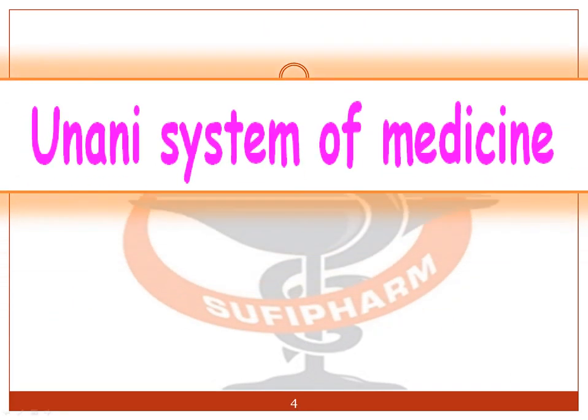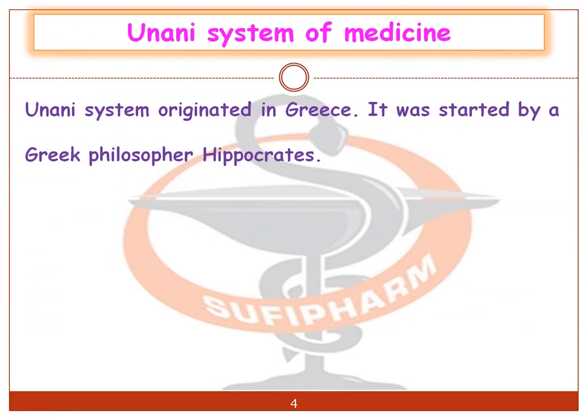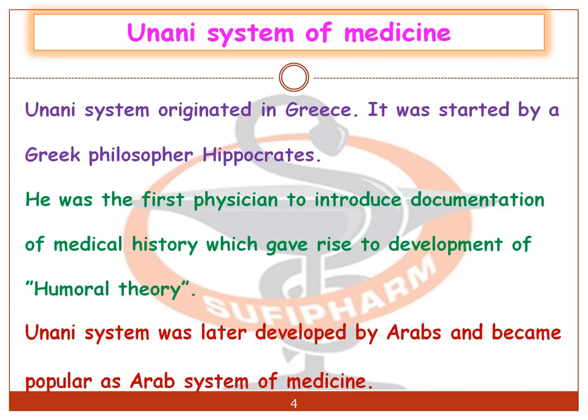What is the Yunani System of Medicine? It originated in Greece and was started by the Greek philosopher Hippocrates. He was the first physician to introduce documentation of medical history, which gave rise to the development of humoral theory. The Yunani System was later developed by the Arabs and became popular as the Arab System of Medicine.